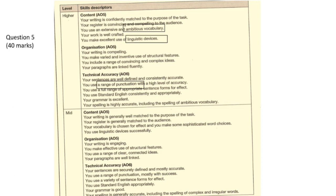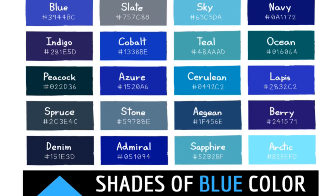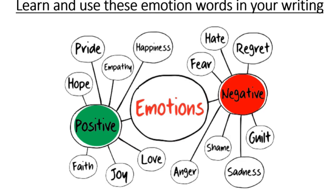One tip is to start each sentence with a different word to make it more interesting to read. From marking papers, I've seen that 50% of people might describe a blue sky as blue, when there are a plethora of shades you can recruit. Choose three of these to memorise and use in your exam. Now choose three positive and three negative emotions — you can add others such as melancholy and jubilance.